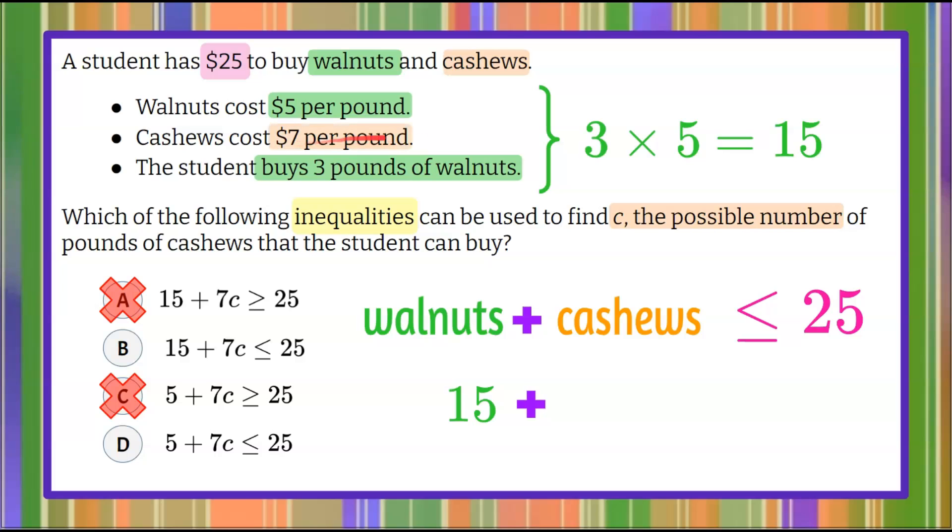So C is for cashews and they're $7 per pound. So we know that 7 times C, the number of pounds that they bought, will represent the cashews. So this is what we call a variable expression, seeing as we don't know how many pounds of cashews they bought, but we know that it's $7 multiplied by the number of pounds.